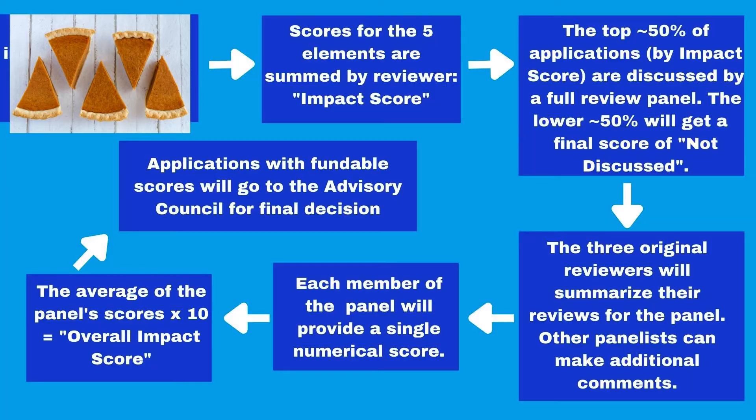Getting into the discussion depends on your five scorable elements — the pieces of the pie. They come into play in the very first step. You have to make sure you address all of these pieces of the pie in order to get a score within the top 50% of those you're competing with, so that you can be discussed and receive a score at the end. Otherwise, you'll get a score of 'not discussed.' So keeping in mind the importance of these pieces of pie, my advice to you is: don't just treat them as forms you have to submit.